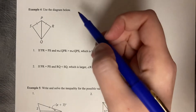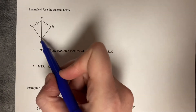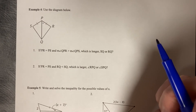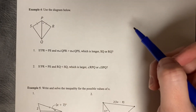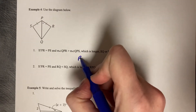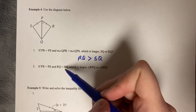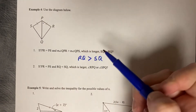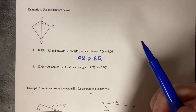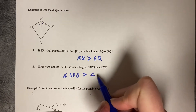Example four: use the diagram to determine which is longer, SQ or RQ. They state that angle QPR is greater than angle QPS, meaning that angle is larger than the other. When comparing SQ to RQ, the side corresponding to the larger angle is longer, so RQ is greater than SQ. Conversely, if RQ is less than SQ, then RQ is the smaller side, SQ is the longer side, and angle SPQ is greater than angle RPQ.